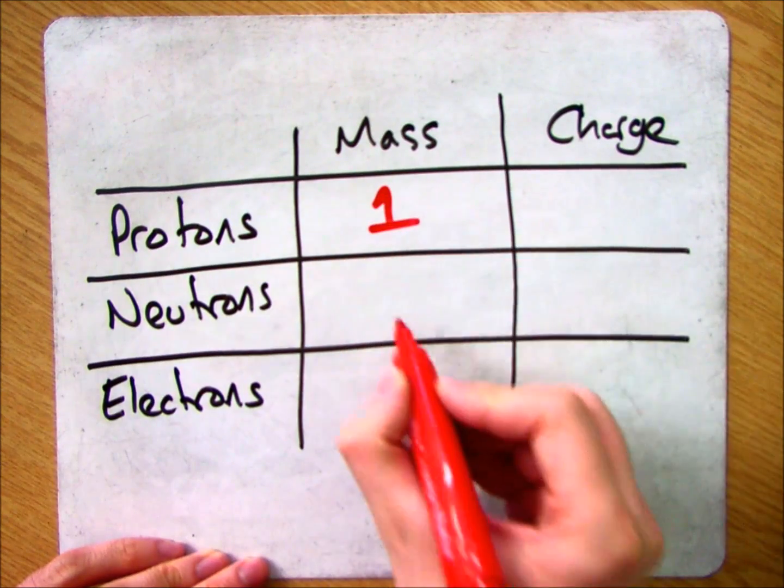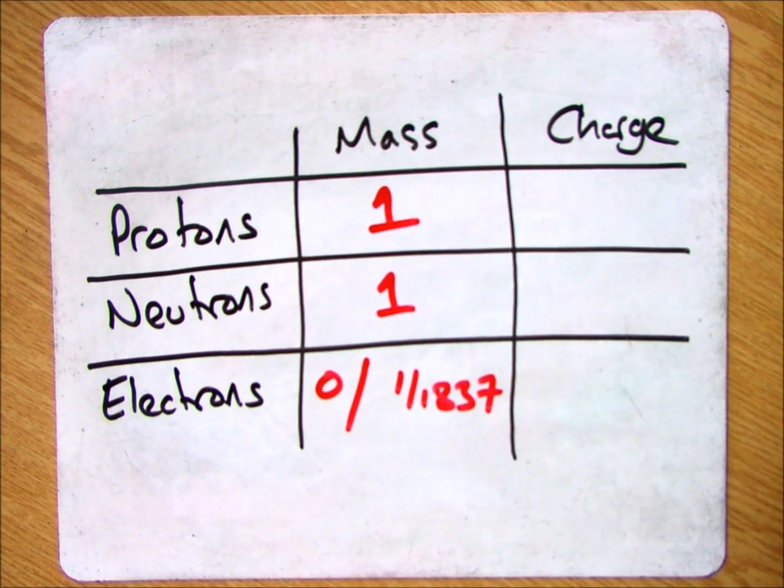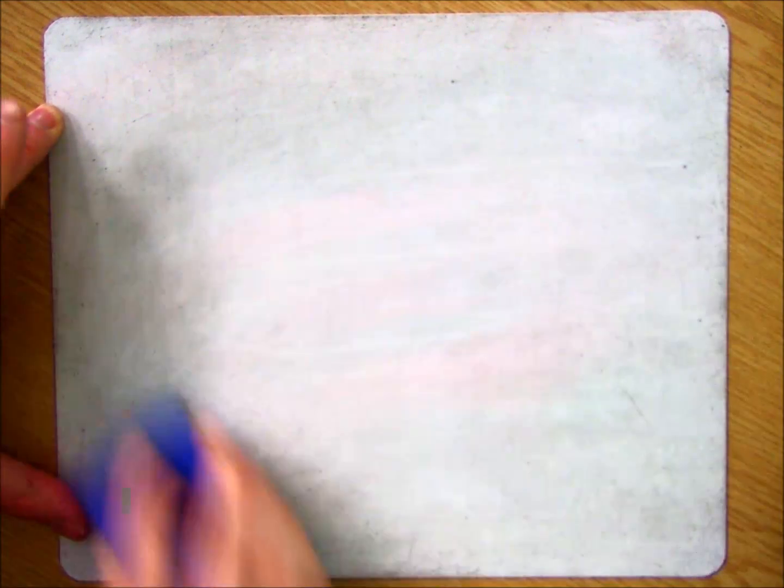So here's a quick summary then. You've got your mass of a proton and a neutron of 1, electron of 0 or 1 divided by 1837, and then charge of protons positive, neutrons neutral and electrons negative.